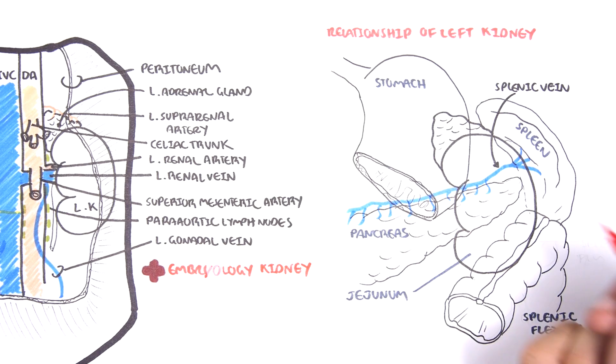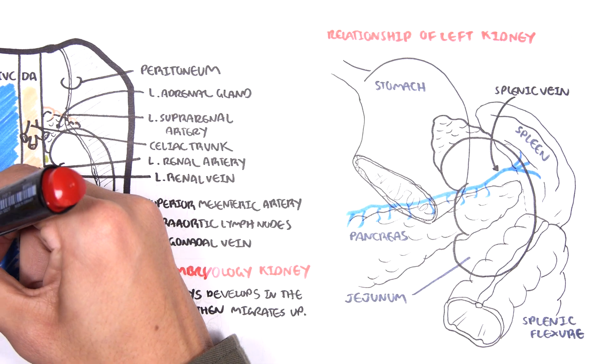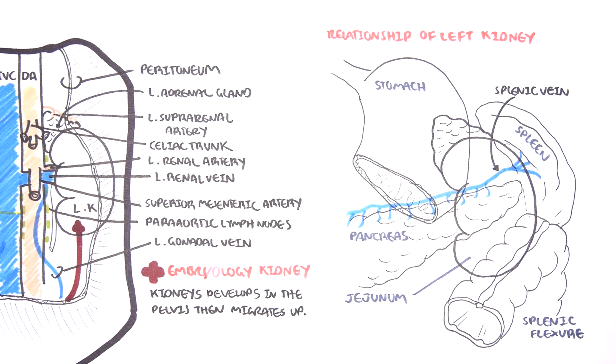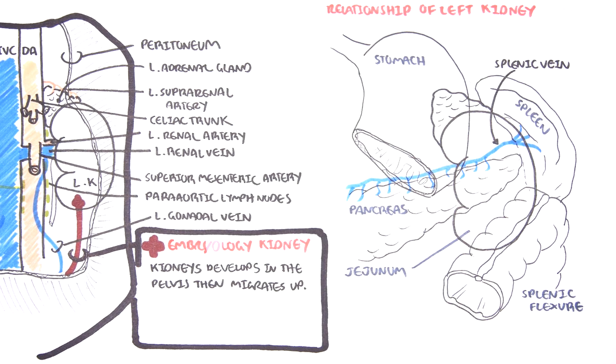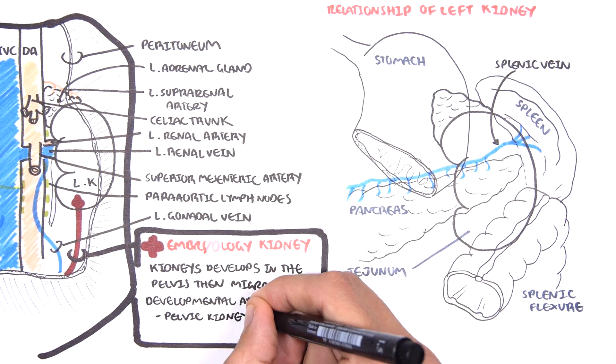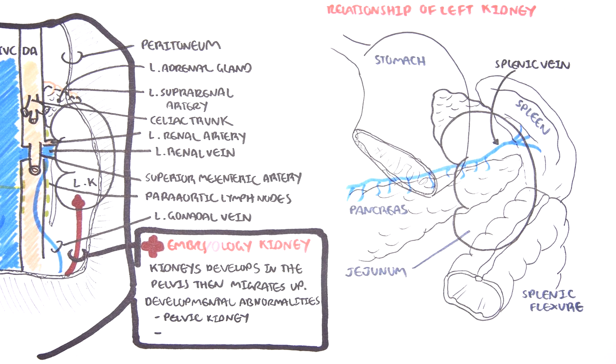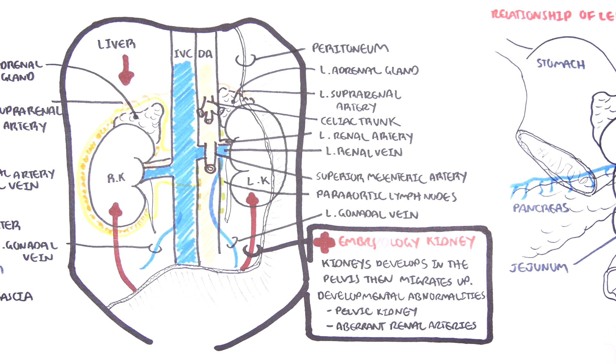The embryology of the kidneys. Now the kidneys actually develop in the pelvis and then they migrate up during embryological development. Developmental abnormalities can occur during this whole process. So for example there is a thing called pelvic kidneys where one of the kidneys can stay in the pelvis and actually fail to migrate up. Another is aberrant renal arteries where a kidney has more than one renal artery and is a very important consideration especially during surgery as these arteries can get in the way.